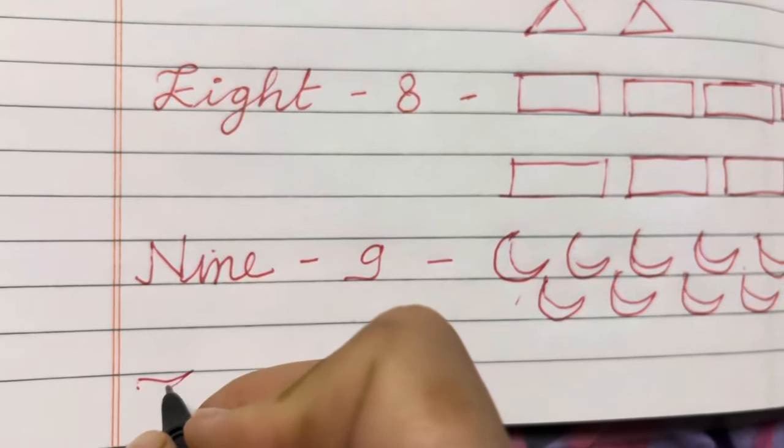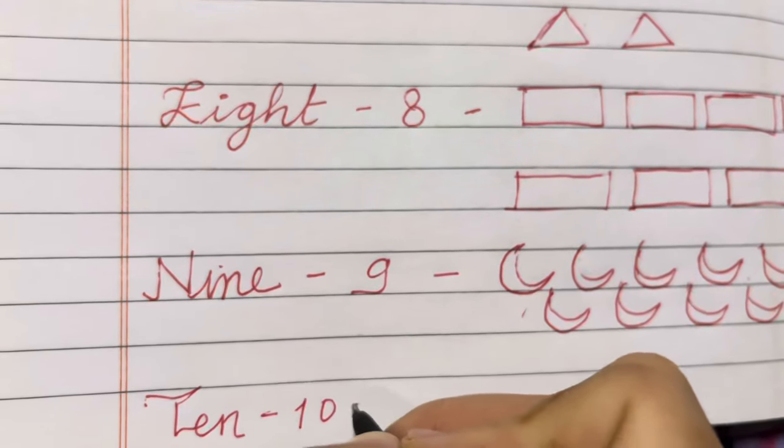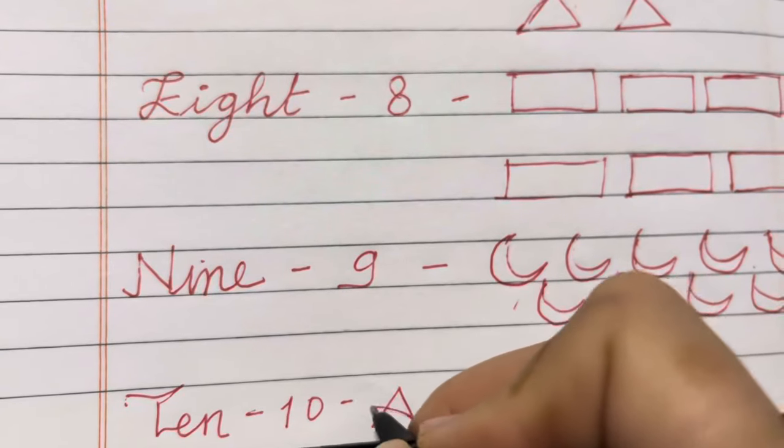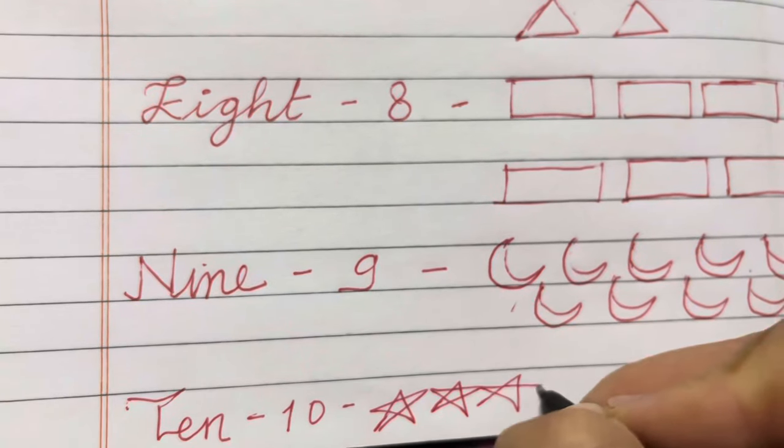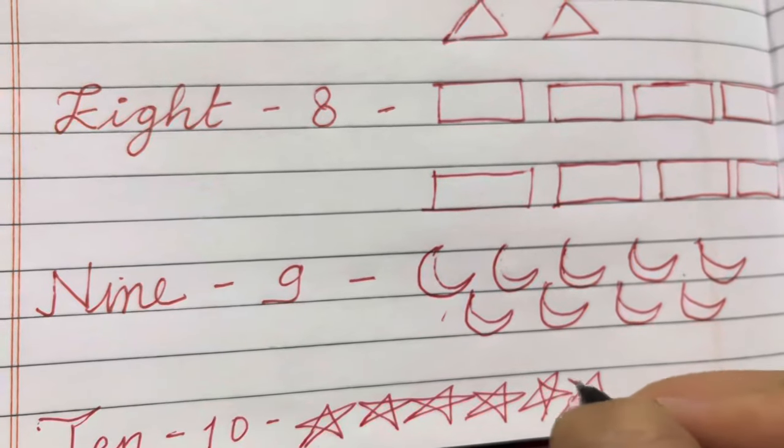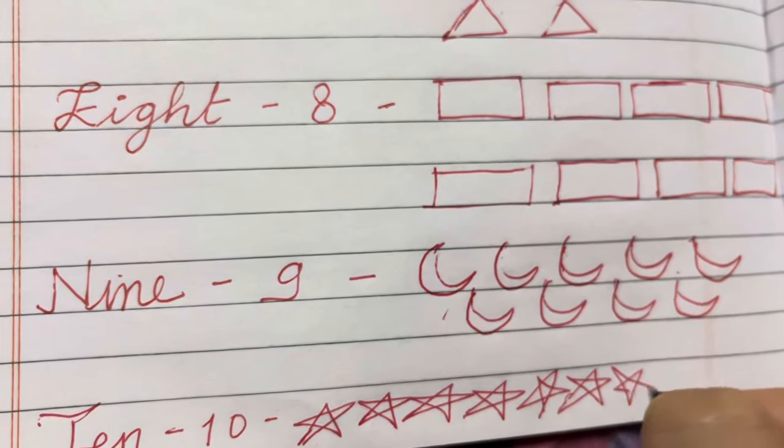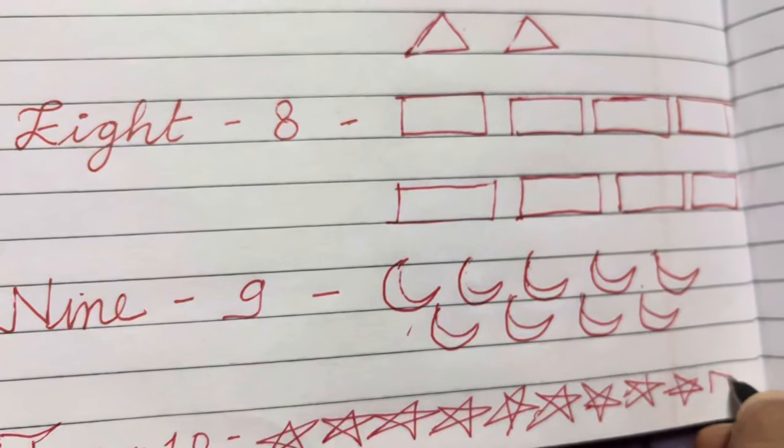Ten. Ten stars. One, two, three, four, five, six, seven, eight, nine, ten.